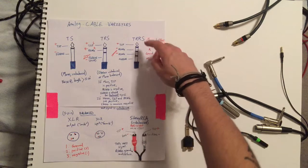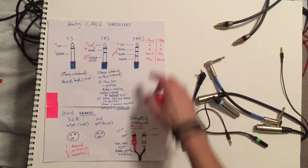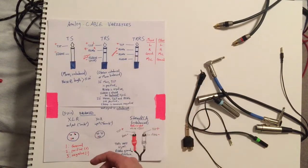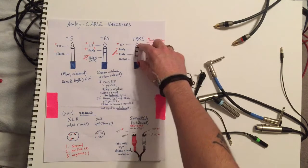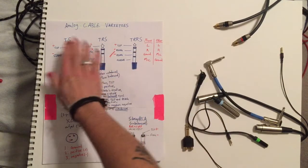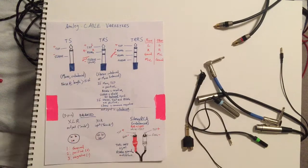The way that this works is you have tip, ring, ring, sleeve and the iPhone has a particular configuration of these conductors, in which case you have two positive ends on the end here and those function as left and right, similar to using the stereo function of the TRS cable.